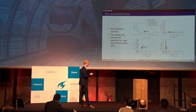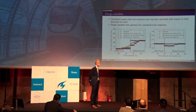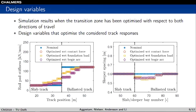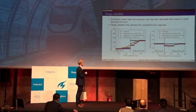Here are the design variables that optimized the responses. The stiffness of the rail pads is somewhat higher when we have optimized with respect to foundation pressure, while the values are quite similar when optimizing with respect to wheel-rail contact force or bogie acceleration.